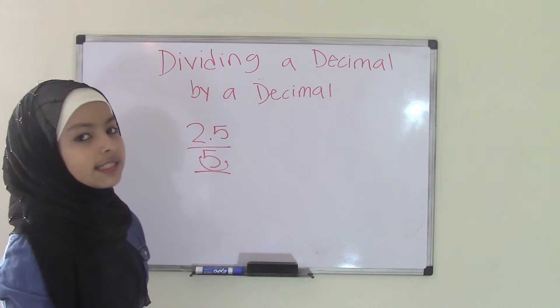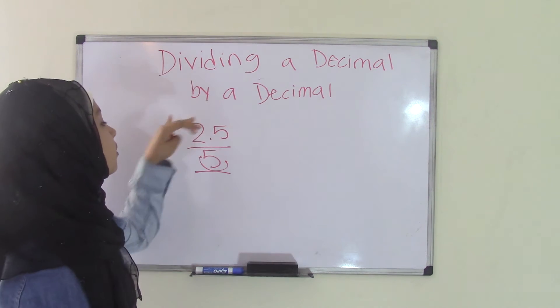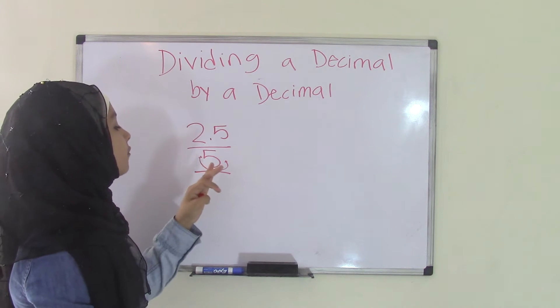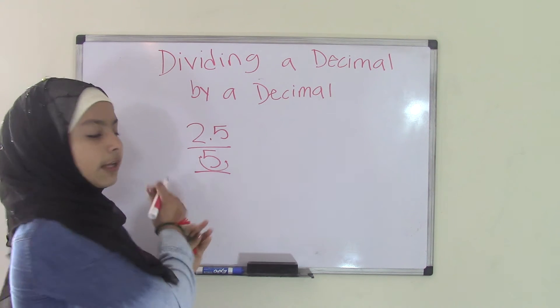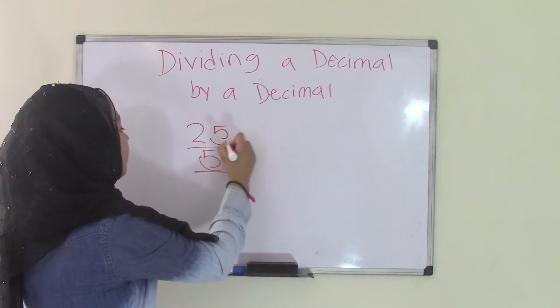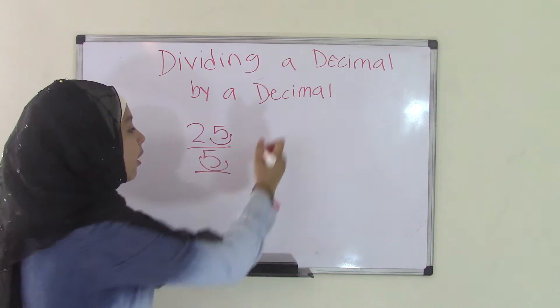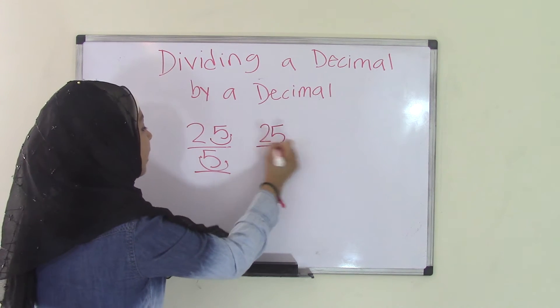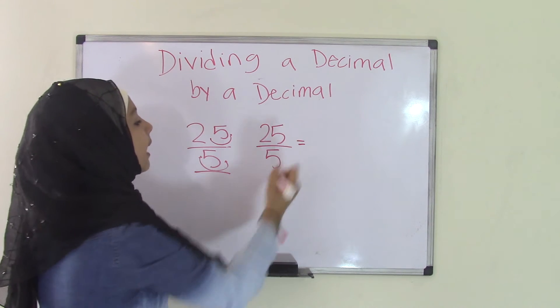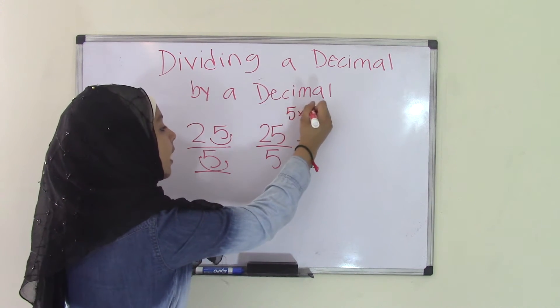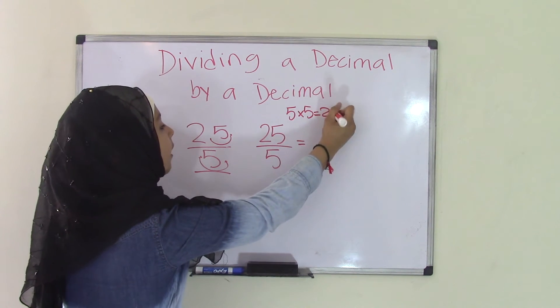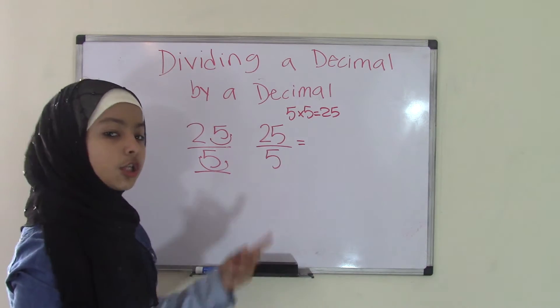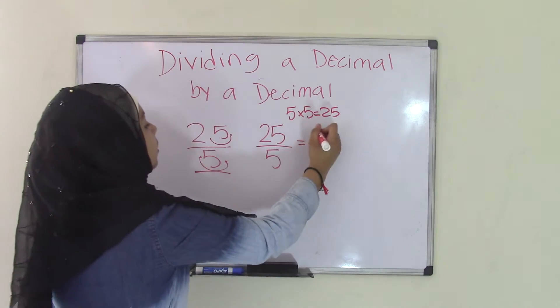But we have to do the exact same thing we did to the divisor to the dividend. So we have to move it one place from left to right in the dividend. So that would become a 25. So now our new problem is 25 divided by 5. And we all know that 5 times 5 equals 25. Therefore, our quotient for 25 divided by 5 equals 5.